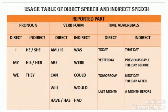For verb forms: 'am' and 'is' change to 'was'; 'are' changes to 'were'; 'can' changes to 'could'; 'will' changes to 'would'; 'has' or 'have' changes to 'had.'